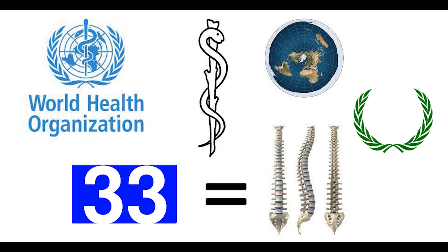I counted all the sections of the emblem, of which there are 33 sections. The number 33 correlates to the number of vertebrae in your spine — the same as how Jesus lived till the age of 33, and there are 33 degrees in Freemasonry. It's all talking about the 33 vertebrae of your spine, and your spinal column always represents ascension. Then we've got the laurel wreath surrounding everything, which represents triumph and success.